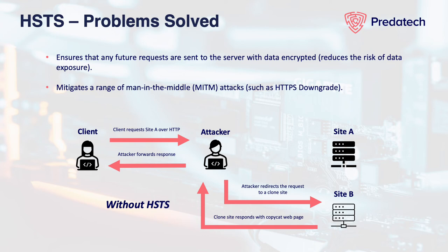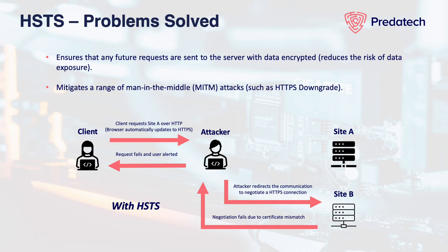However, when a user visits a website that uses the HSTS header and they've either visited the site before or the site is on Google's preload list, their initial request will be sent over HTTPS. So if an attacker tries to redirect network traffic to a malicious server, the TLS handshake will initiate with the malicious server but will fail because the certificate does not match the valid site. The user will be alerted and no data will potentially be exposed.